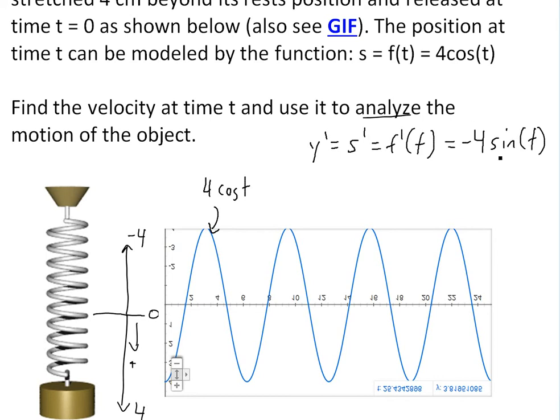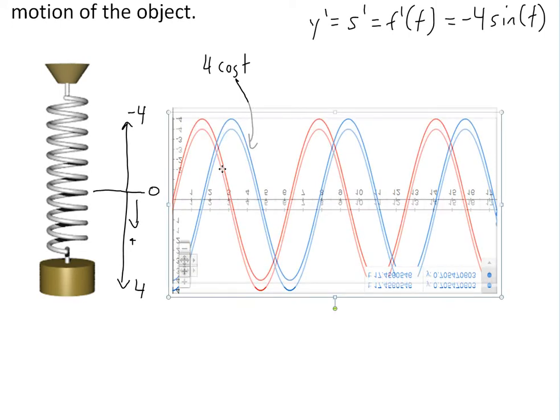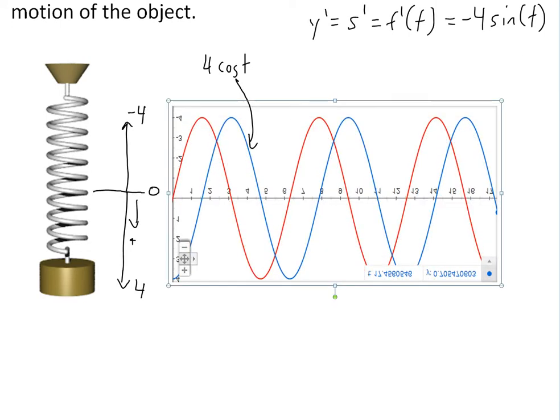You get something like this - this is going to be the exact same thing now except you'll start at zero. Here I've quickly graphed that function, the -4sin(t), and I've flipped it around upside down as well, just because down is positive now. The red curve is going to be -4sin(t).